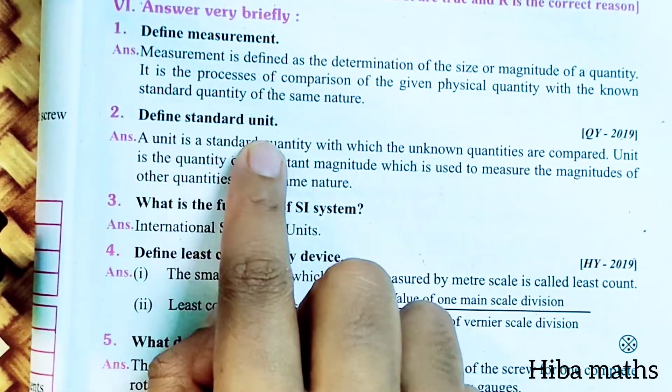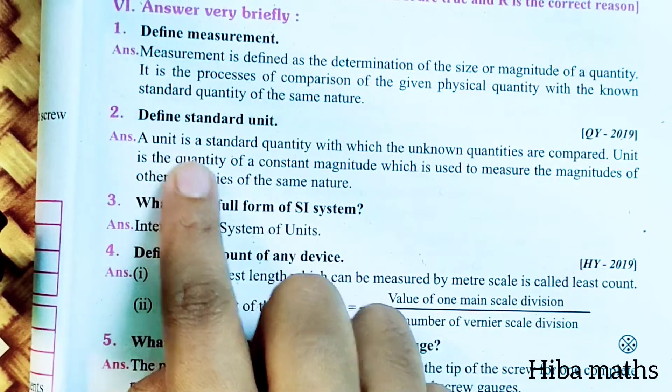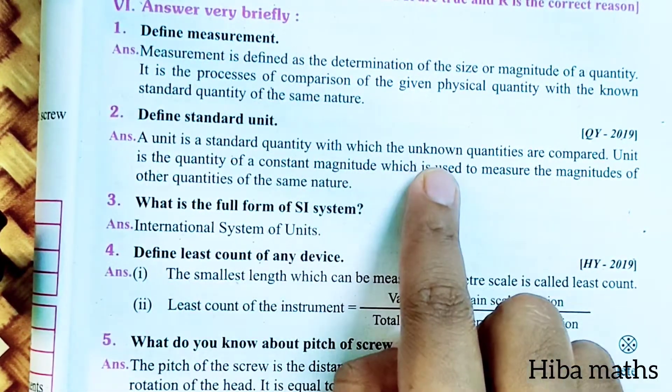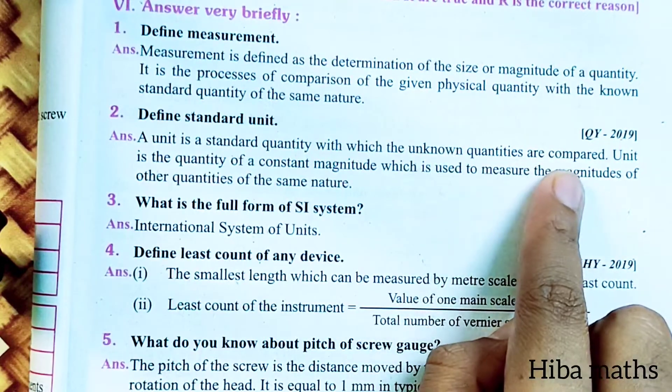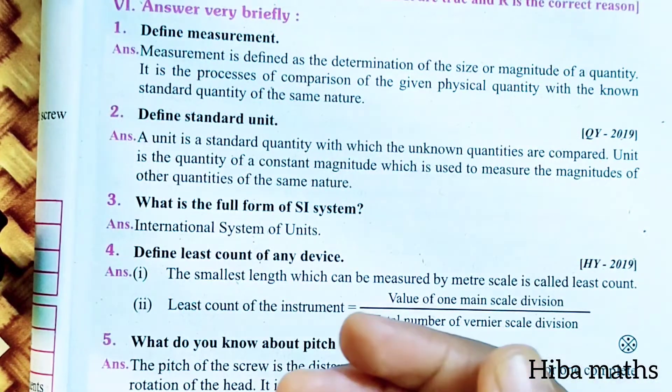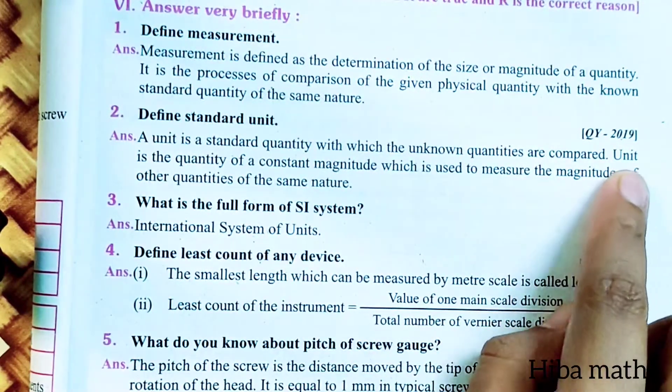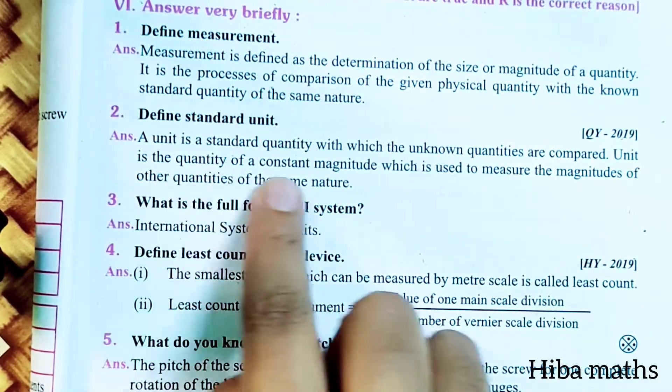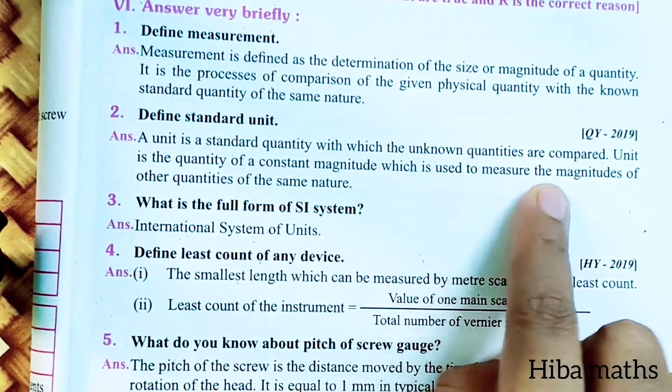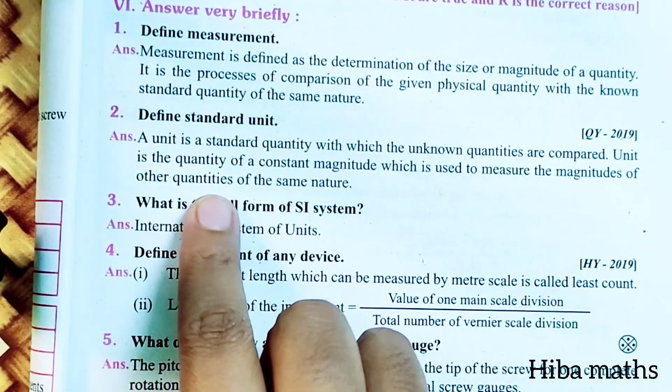Define standard unit. A unit is a standard quantity with which the unknown quantities are compared. The unit is the quantity of a constant magnitude which is used to measure the magnitude of other quantities of the same nature.